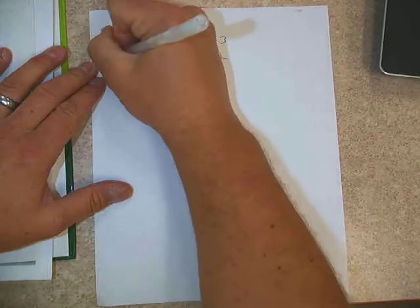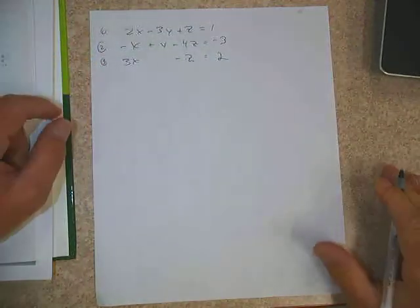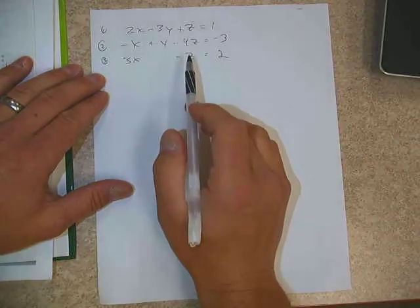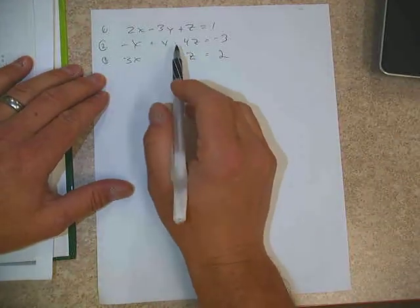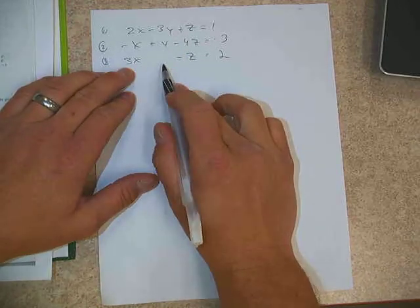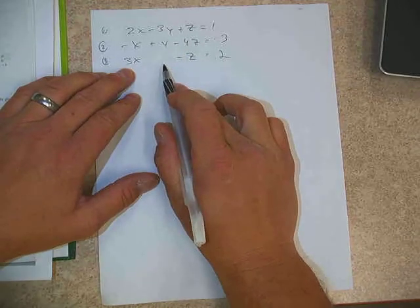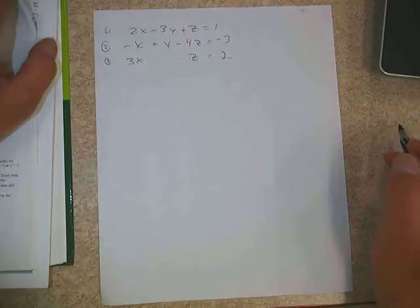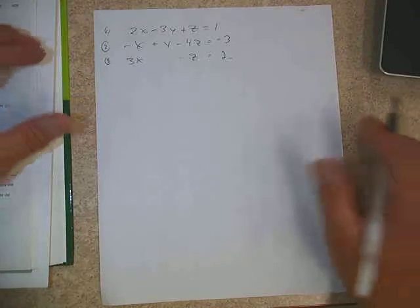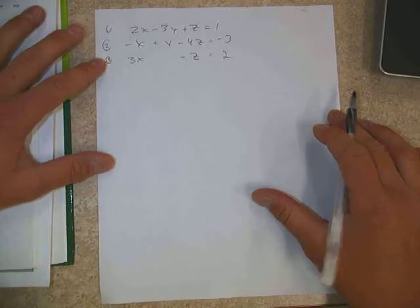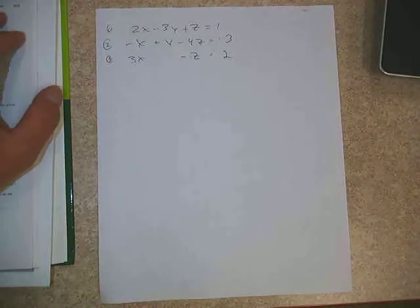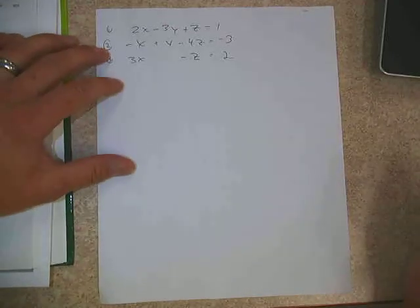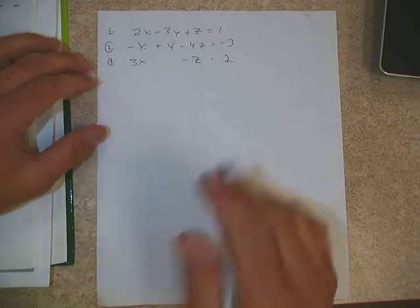If we number these 1, 2, and 3, what we ultimately want to do is get in a position where we can get rid of another variable. For instance, equation 3 already has y gone. So if we could take equations 1 and 2 and combine them to get rid of y, we'd have two equations with just x and z, and with two equations and two variables we could eliminate x or z, get down to one variable, then substitute back to find the other two values.